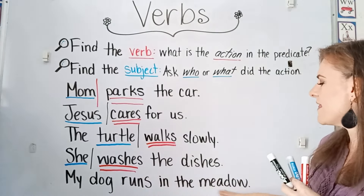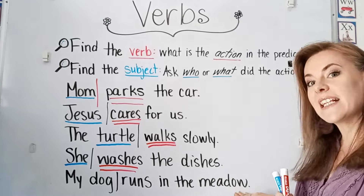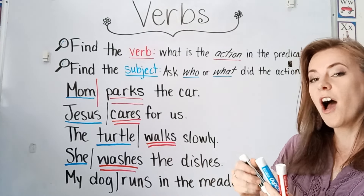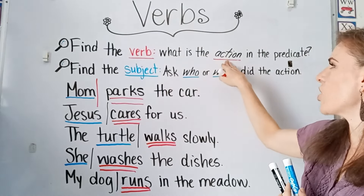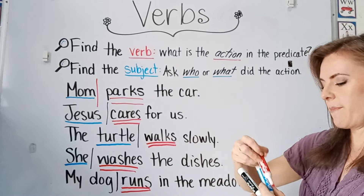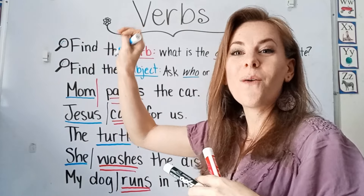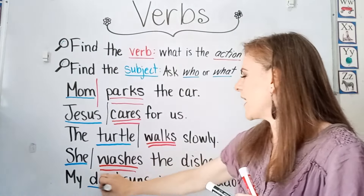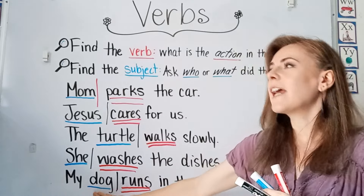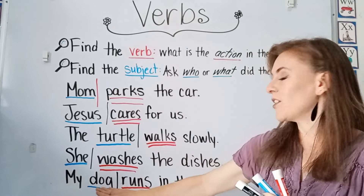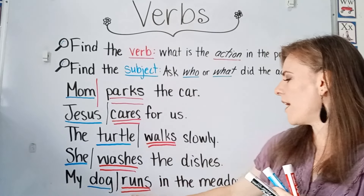And for our last sentence: my dog runs in the meadow. So what is the action being done in the predicate part of the sentence? Runs. Runs is the action being done — it is the verb because it is showing the action, and it's in the predicate part of our sentence. And we would ask: who or what is running in the meadow? Well, my dog. So we know that dog is the subject — the dog is what is running in the meadow.